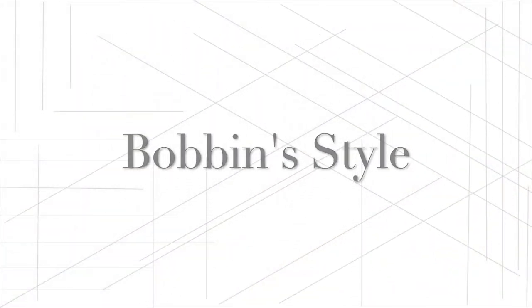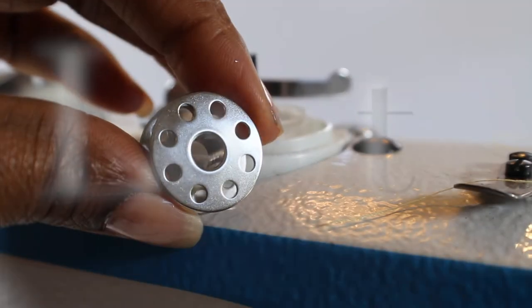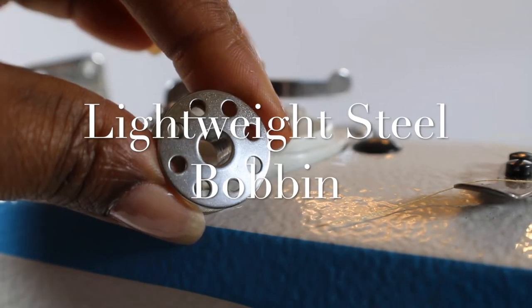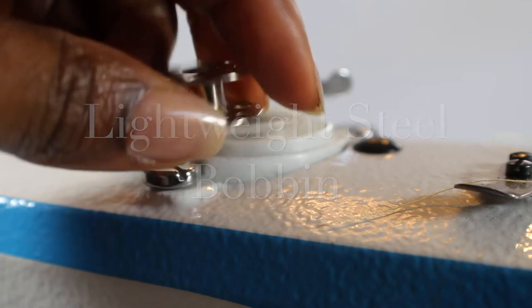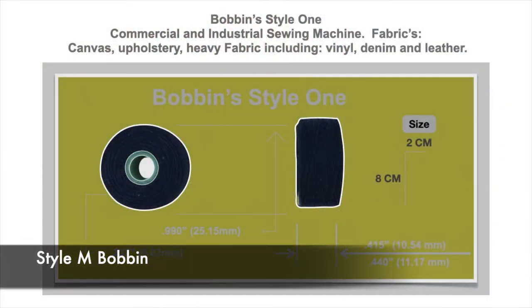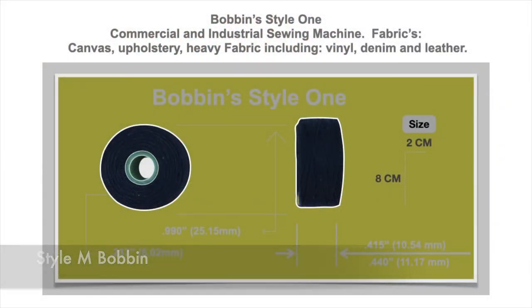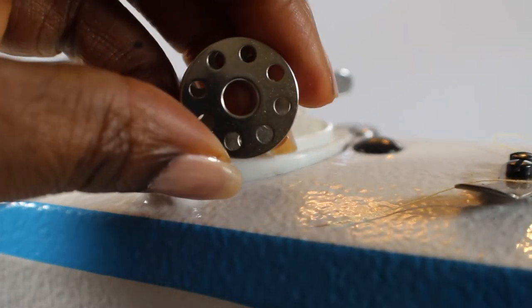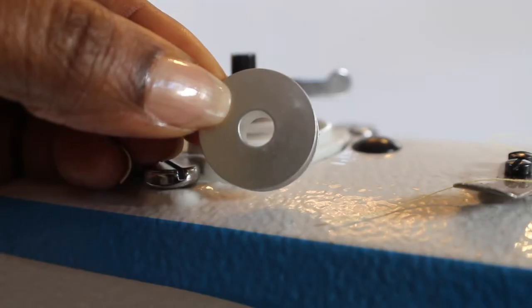So this is the bobbin that I received from the manufacturer when I bought the machine. It has holes on both sides and they're pretty big holes. I received ten of them.